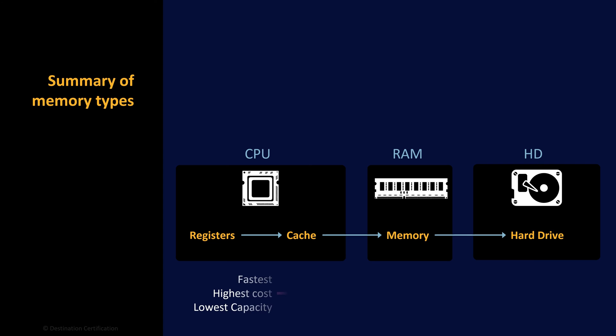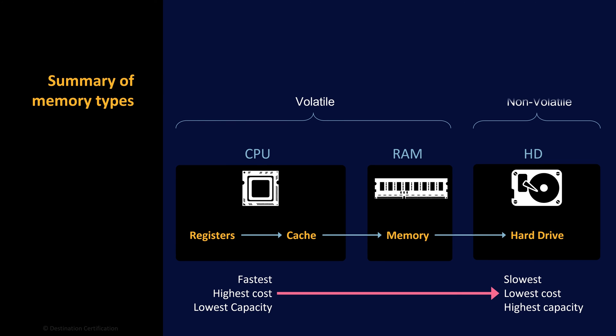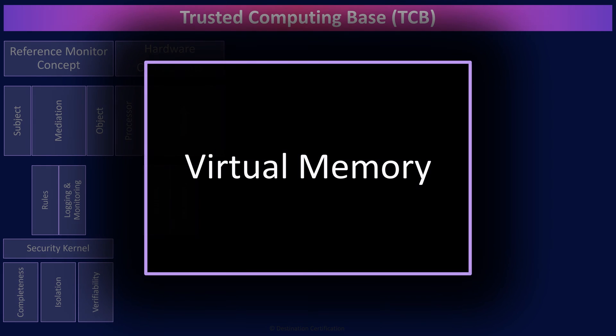Here's a diagram that depicts a few types of memory we just discussed, starting with the fastest, highest cost, and lowest capacity options on the left, moving over to the slowest, but lowest cost and highest capacity on the right. The memory built into the CPU — registers and cache — and RAM are examples of volatile memory, and a hard drive is a perfect example of non-volatile memory.